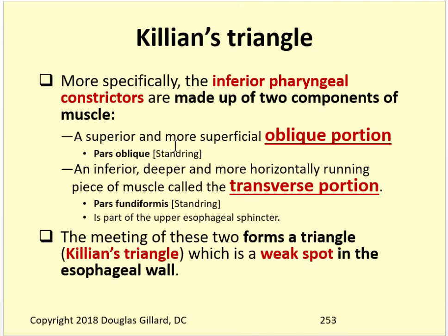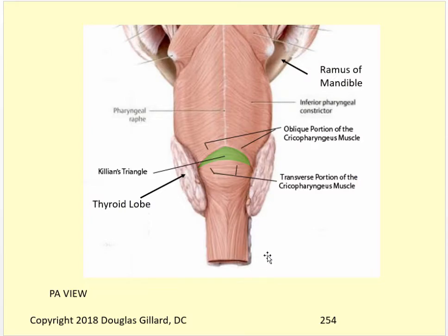The superior portion is the oblique portion. Standring - that big thick anatomy book - calls it the pars oblique, and calls the transverse portion the pars fundiformis. Those two make up Killian's Triangle. Where they come together can form a weak spot embryologically, and that weak spot can herniate.